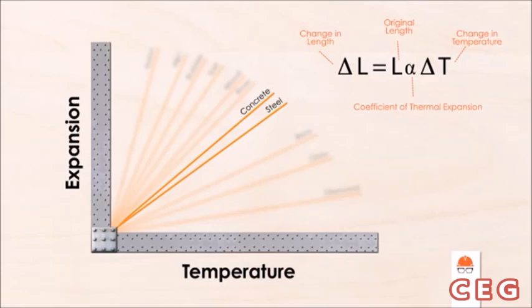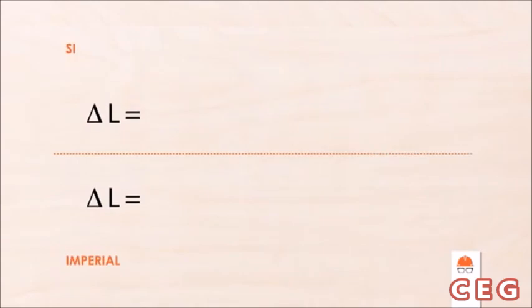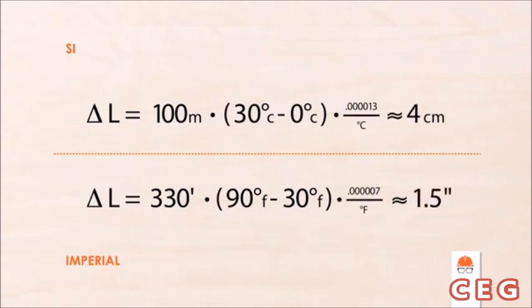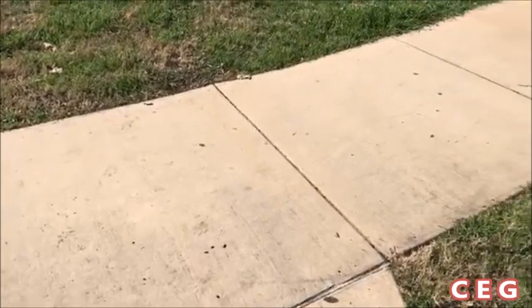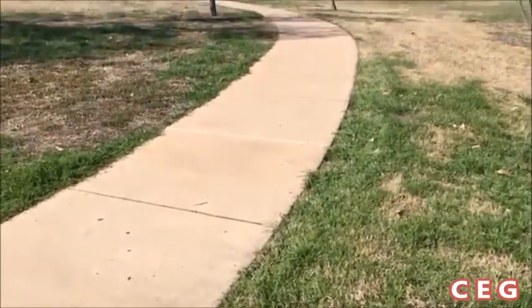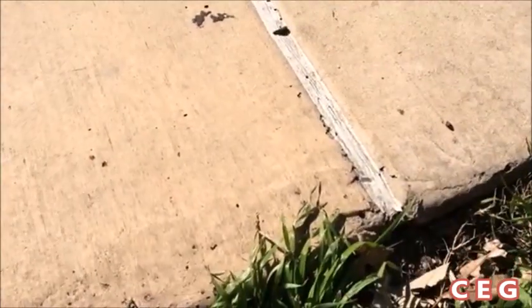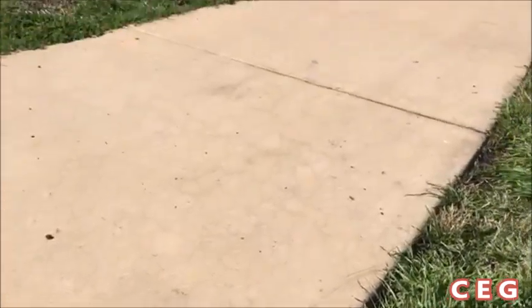A perfect example of this is a sidewalk. Let's look back at our formula and plug in some numbers for a very typical situation. If we enter values for the average length of a city block, the average high and low temperatures in a given year, and the thermal expansion coefficient for concrete, we can see the total movement of a sidewalk over the course of a year can be upwards of 4 centimeters, or 1.5 inches. Obviously, you can't leave a gap in the sidewalk that big at the end of every block, so instead we leave small gaps spaced every so often to accommodate that movement. Most of the joints you see along a sidewalk are just to control cracking, but every so often you'll see an actual break in the concrete filled with some kind of flexible material. These are expansion joints that give the walkway the freedom to move from fluctuations in temperature.